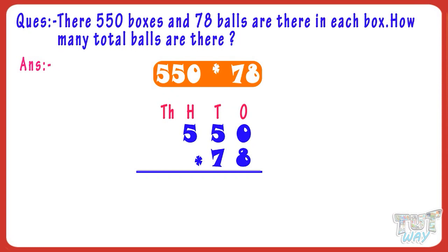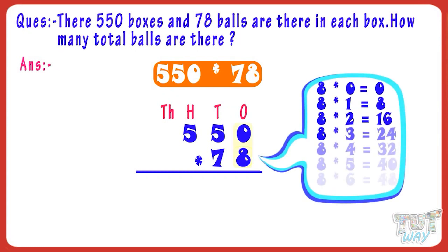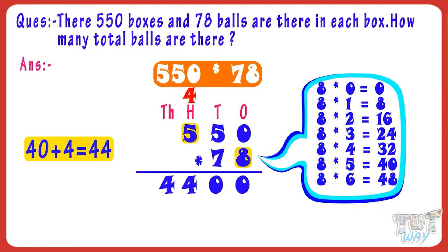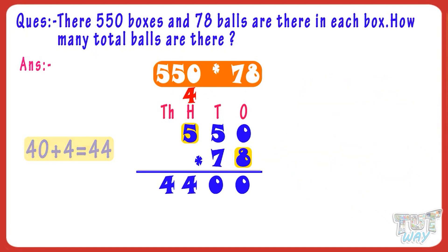Now multiply 550 with the one's digit of 78, that is 8. 8 multiplied by 0 equals 0 — anything multiplied by 0 is 0. 8 multiplied by 5 equals 40. Write 0 in the product and carry over 4, as we always keep the 1's place in the product and carry over the 10's place.